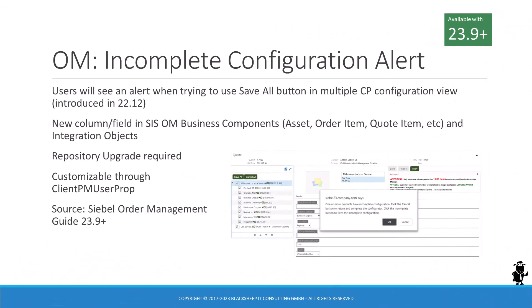If you run the repository upgrade for 23.9 or higher, the view to configure multiple customizable products in parallel will be updated — recall that this view was introduced in 22.12. The new behavior, as described in the Order Management Guide, is that users will be prompted with an alert when trying to use the Save All button and any of the customizable product configurations are incomplete. This feature is driven by Siebel OpenUI and can be customized via ClientPM user properties.